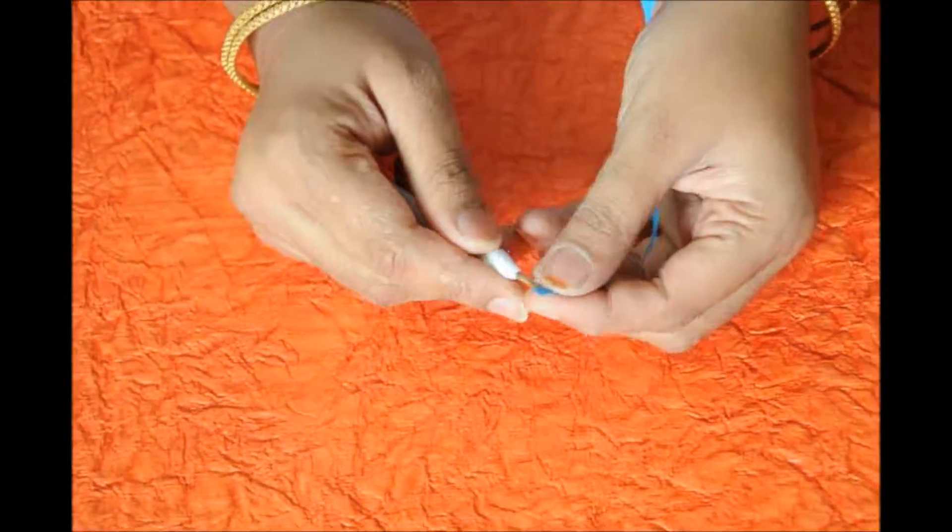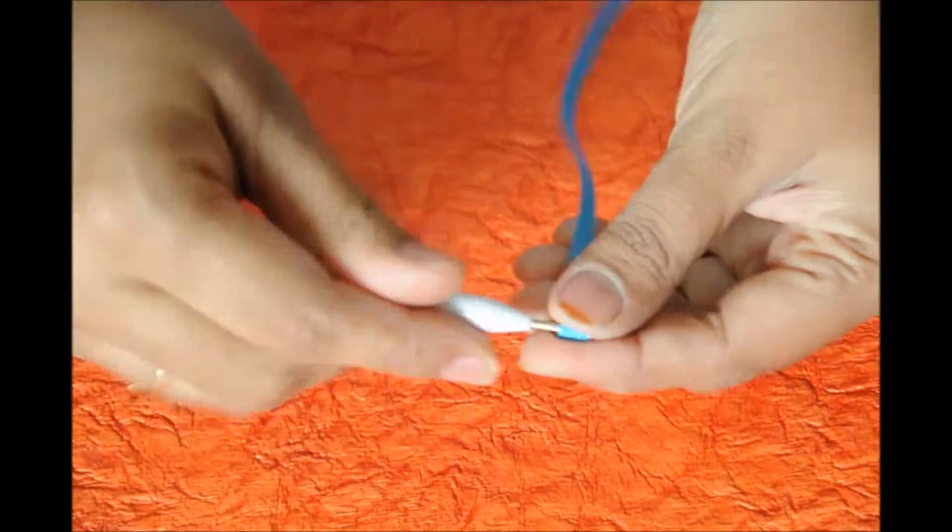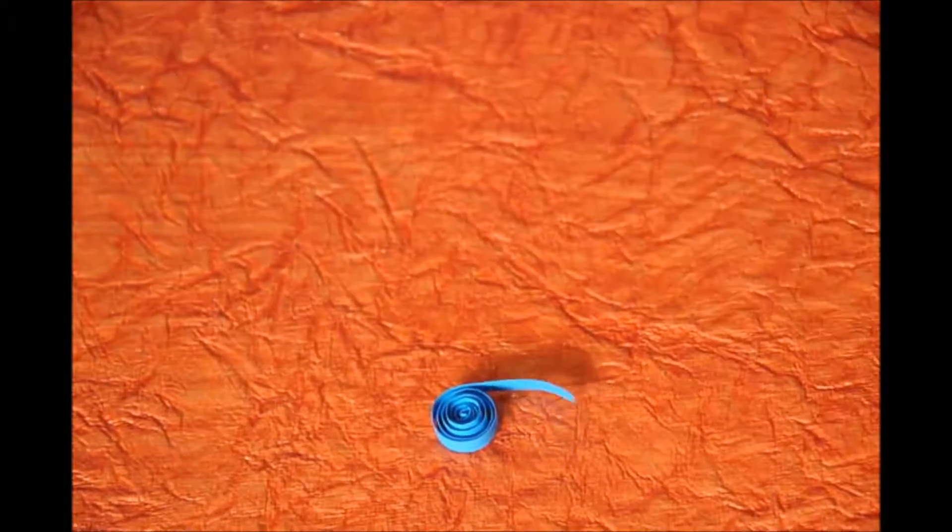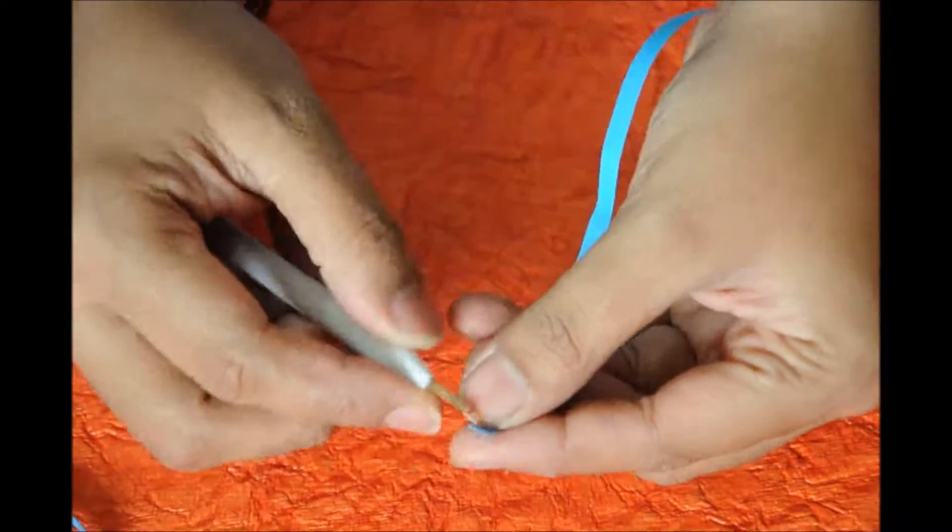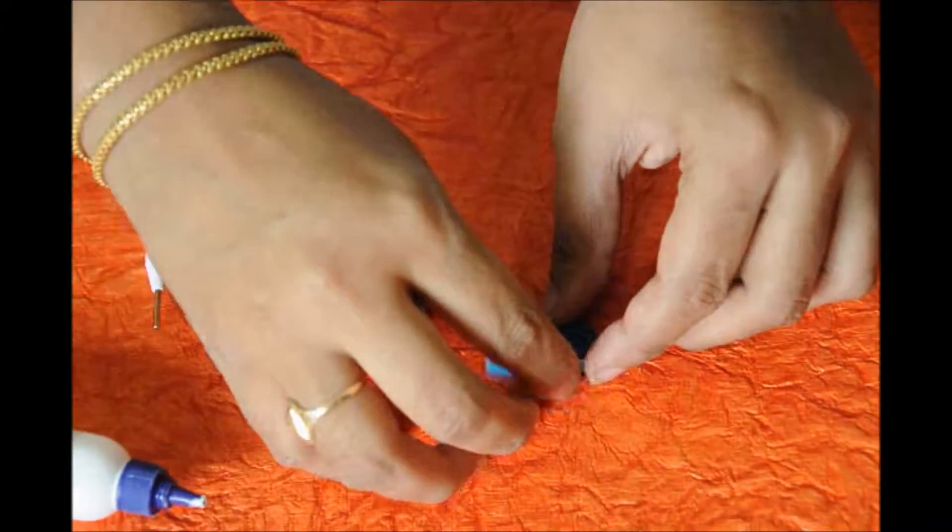Take half quilling strip, insert the quiller and start rolling until the end. Loosen it. Repeat the same process for the other quilling strip as well.